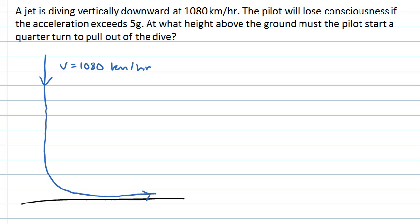The information we are asked to find is at what height above the ground does the jet have to start pulling out of its dive. We are told that the pilot will lose consciousness if the acceleration exceeds 5g. We don't want the pilot to lose consciousness, so the maximum acceleration at any point has to stay less than 5 times the gravitational acceleration on Earth.